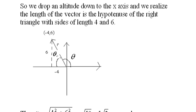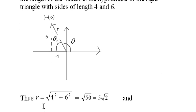So we found r pretty quickly. r is just the square root of 4 squared plus 6 squared, the square root of 50, or 5 times the square root of 2.